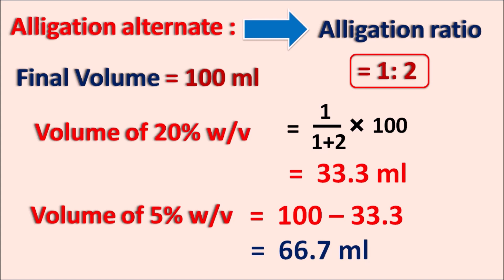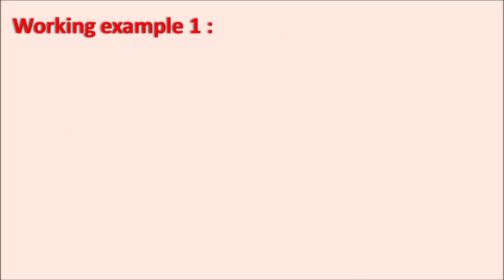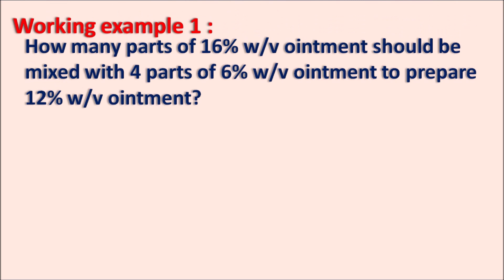Allegation alternate makes the calculation very simple by allowing us to easily calculate the mixing ratio and the volumes of solutions to be mixed. Now let us take working example 1: How many parts of 16% weight by volume ointment should be mixed with 4 parts of 6% weight by volume ointment to prepare a 12% weight by volume ointment?